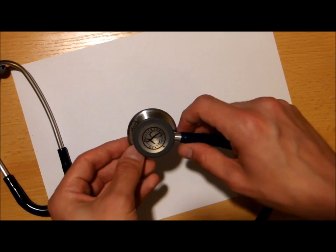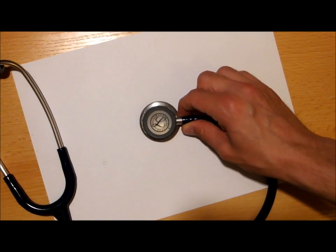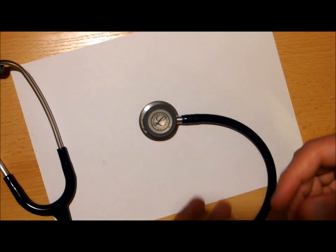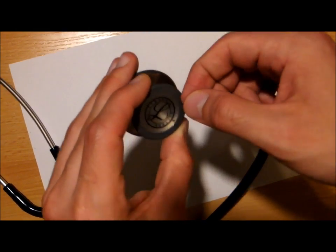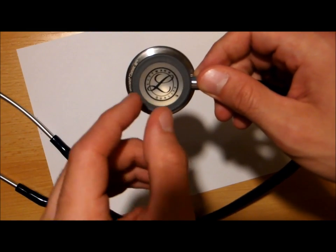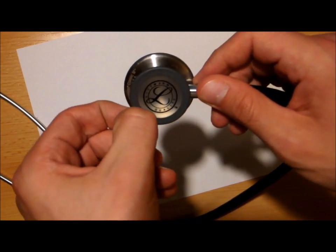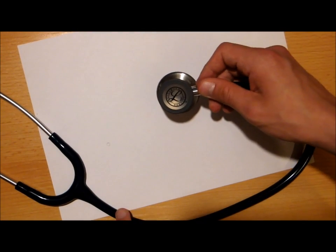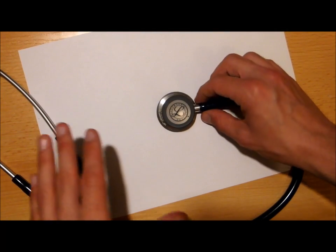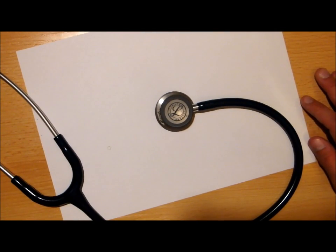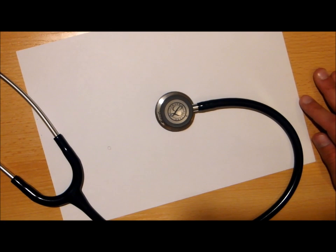The instruction manual said that it is easy to be done by just pinching the rim of the gum diaphragm and just peeling it off, and so said the YouTube videos, the official Littmann YouTube videos that I saw, but none of those methods worked for me actually.